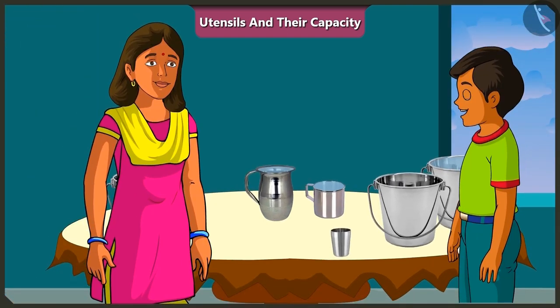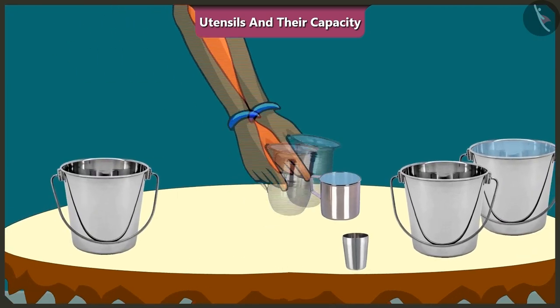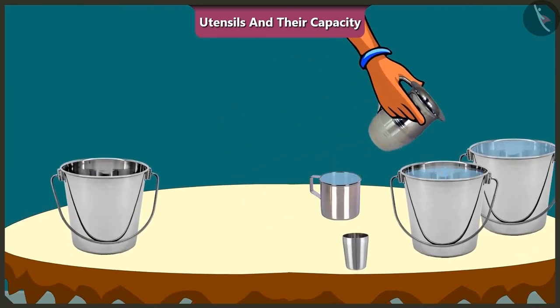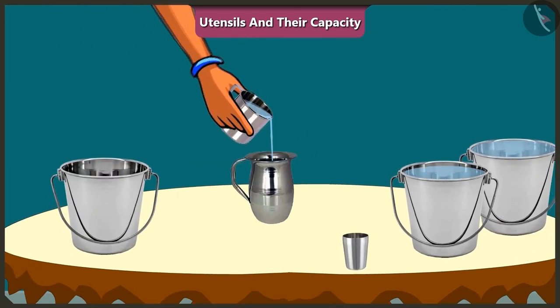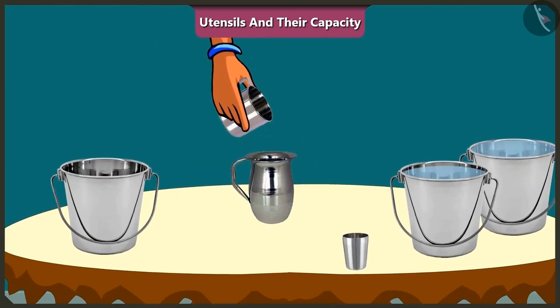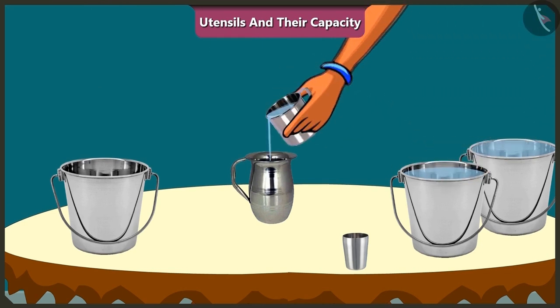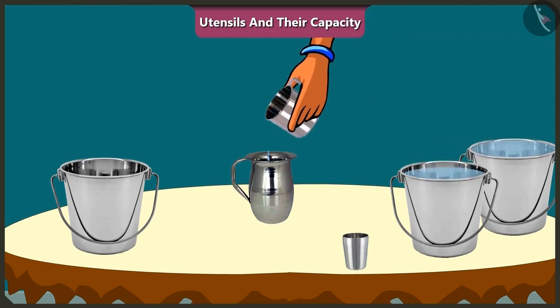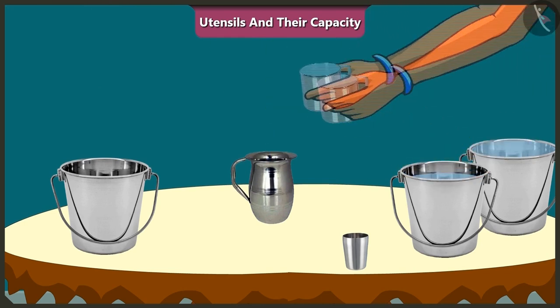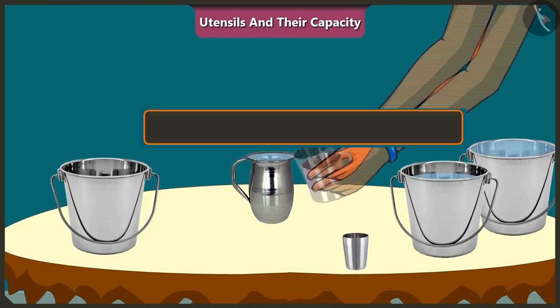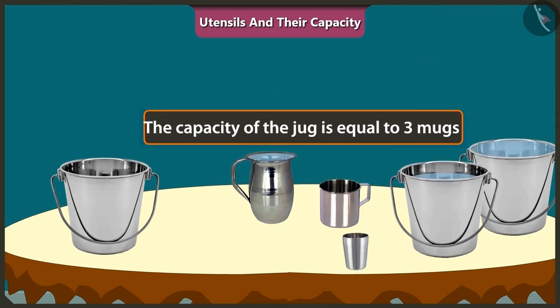Mummy, can we fill the jug with the mug of water? Yes. One, two, and three mugs. So, the capacity of this jug is equal to three mugs of water.